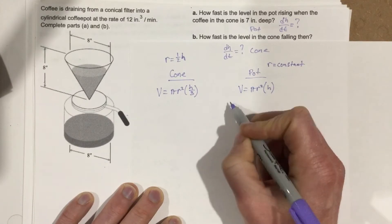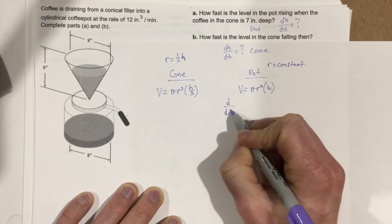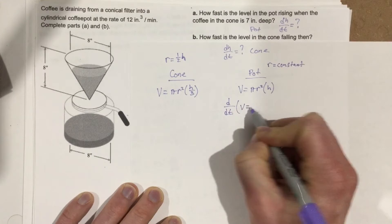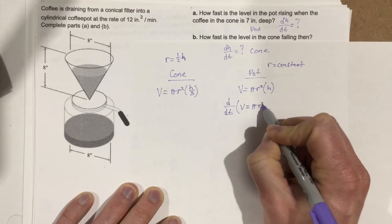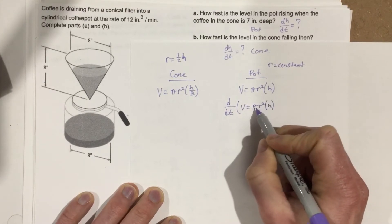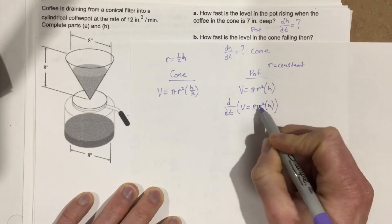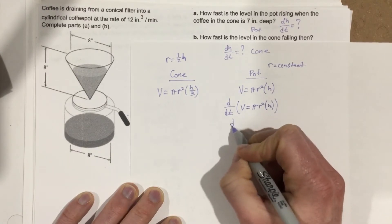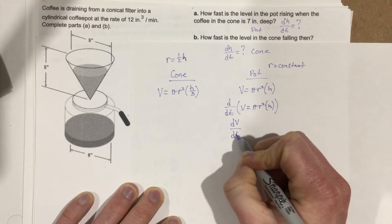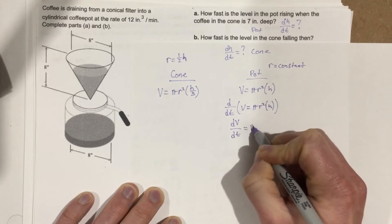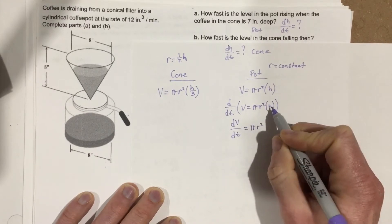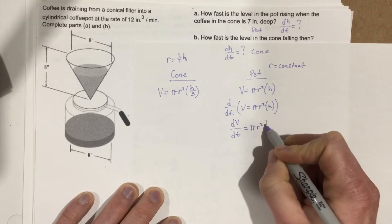Let's start by taking the derivative with respect to t for this equation. Remember that r² and π are constants. So dV/dt equals πr² times dh/dt.